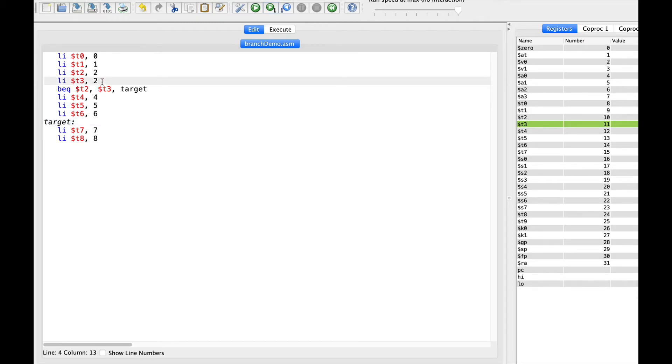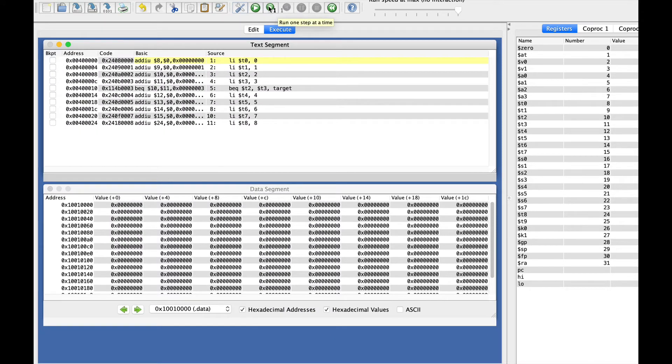If I come in here and give T3 a different value and step through the code, now T2 and T3 don't have the same value in them. So control just continues on to initialize 4, 5, and 6.